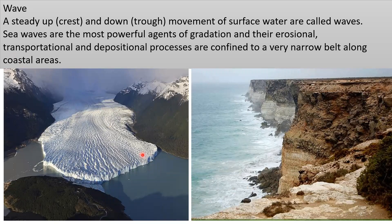Now let us move on to the action of waves. A steady up and down movement of surface water is called waves. Sea waves are the most powerful agents of gradation, and their erosional, transportational and depositional processes are confined to a very narrow belt along the coastal areas.